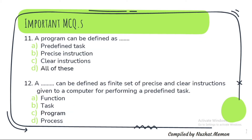Question 11: A program can be defined as — the correct option is all of these: predefined task, precise instructions and clear instructions. Question 12: A program can be defined as a finite set of precise and clear instructions given to a computer for performing a predefined task.